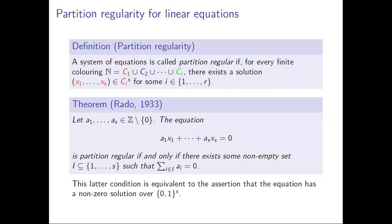In his PhD thesis, Rado classified partition regular linear systems. For the moment we're just going to look at single equations. If we look at the linear homogeneous equation sum of a_i x_i equals zero, then this equation is partition regular — meaning that whenever we finitely color the positive integers we can find x_i all the same color satisfying this equation — if and only if there exists some non-empty subset of the indices such that the corresponding a_i sum to zero.